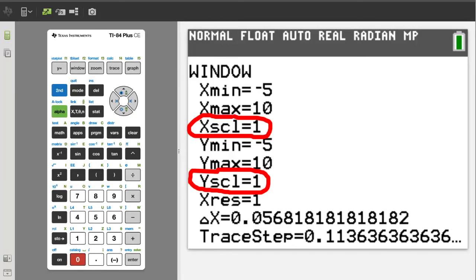The y and x scale equals 1 which is ok. That means that the distance between each tick mark is one unit. Now press the graph button to see the new graphing window.